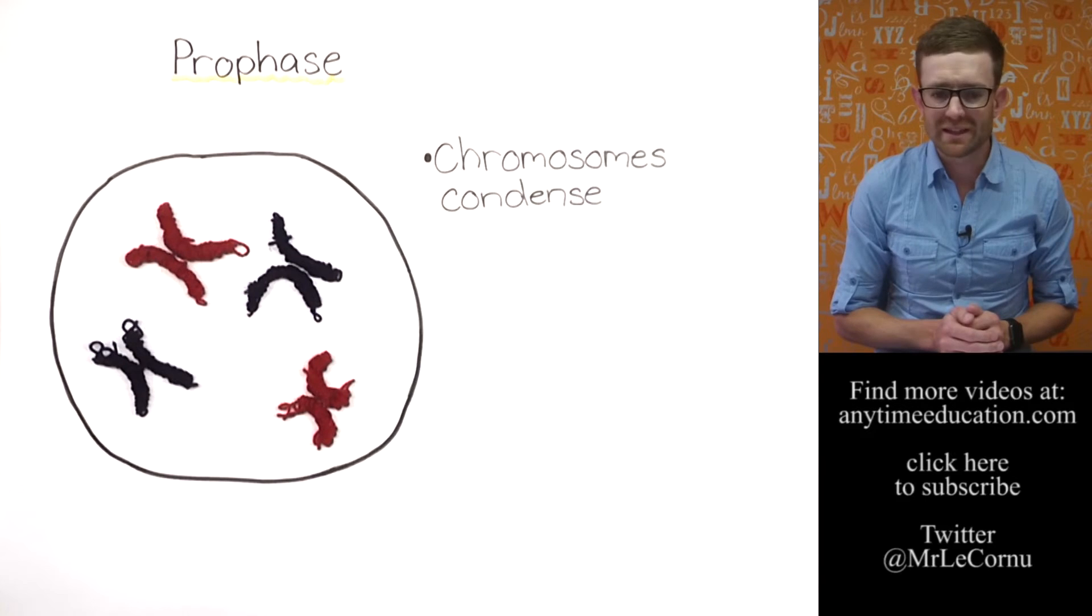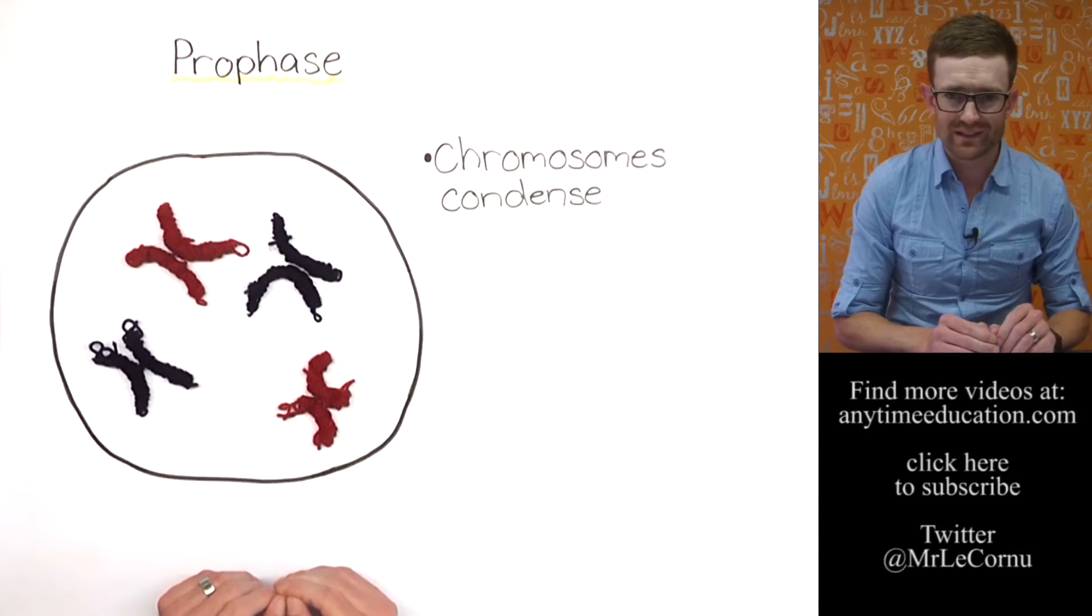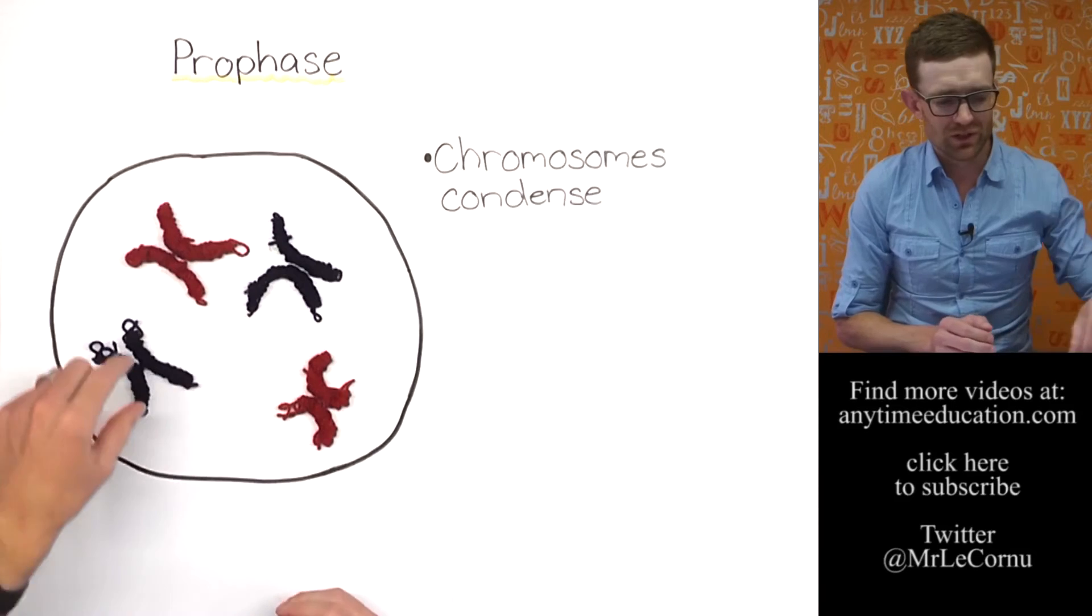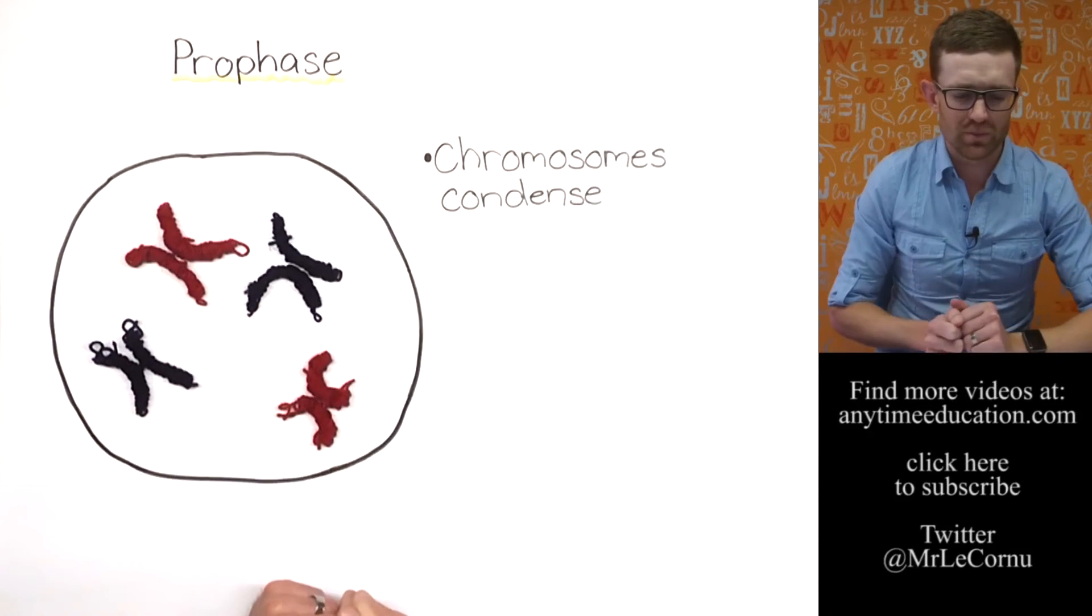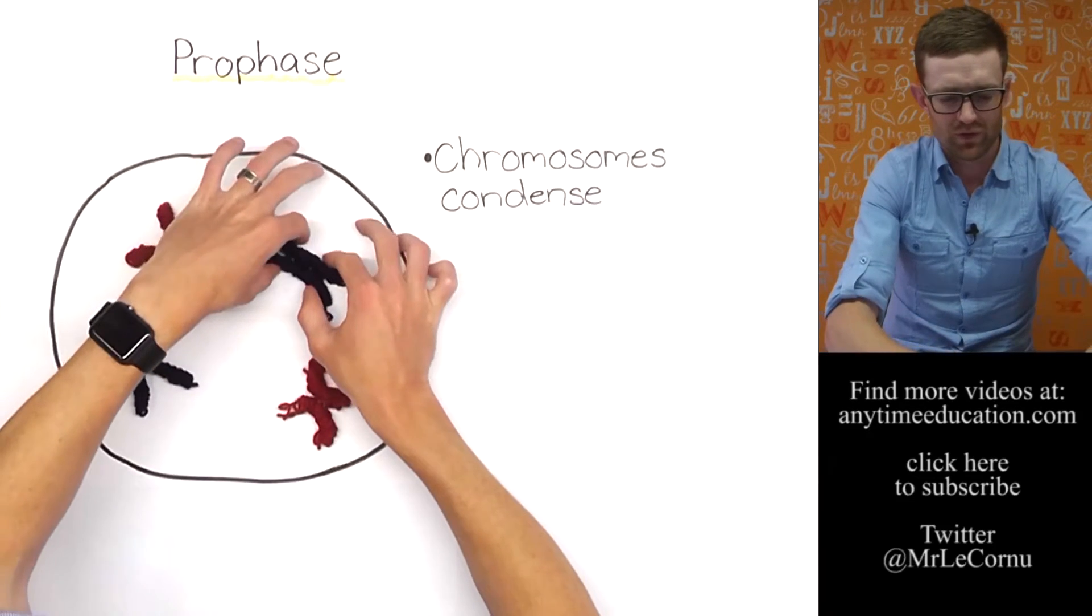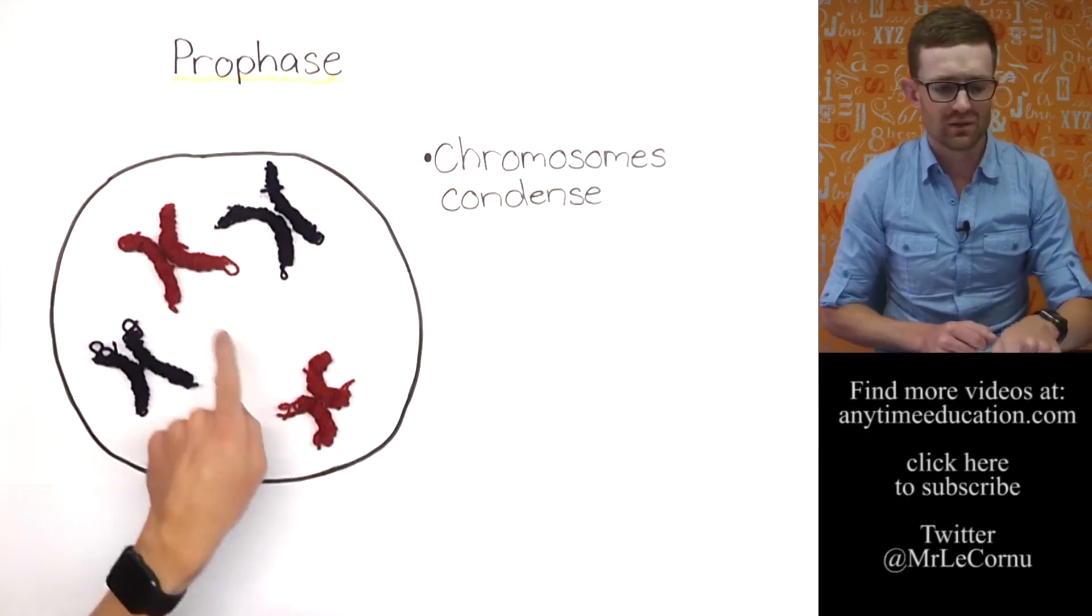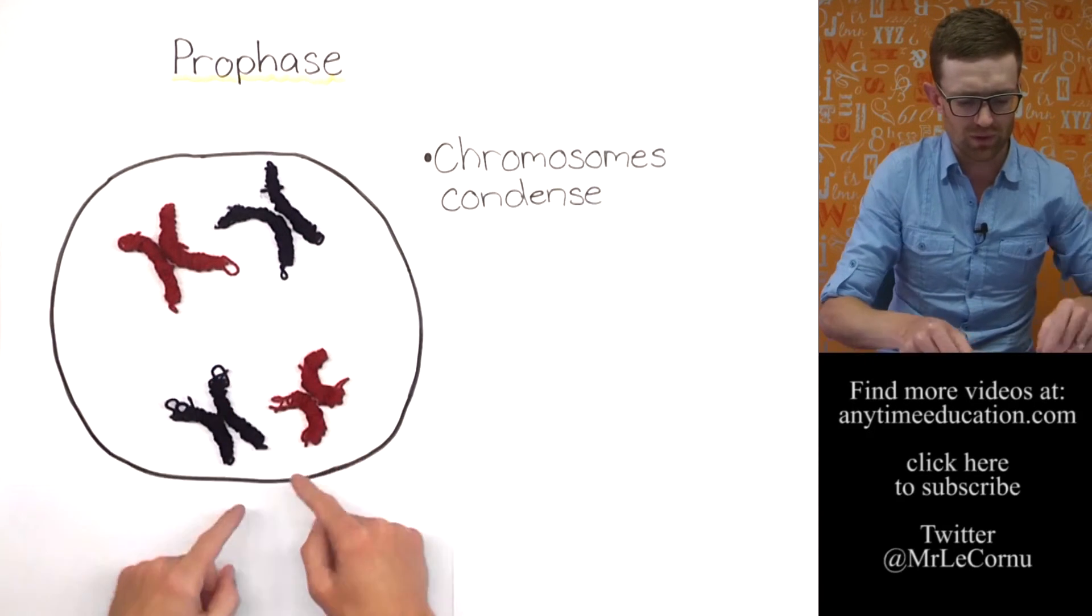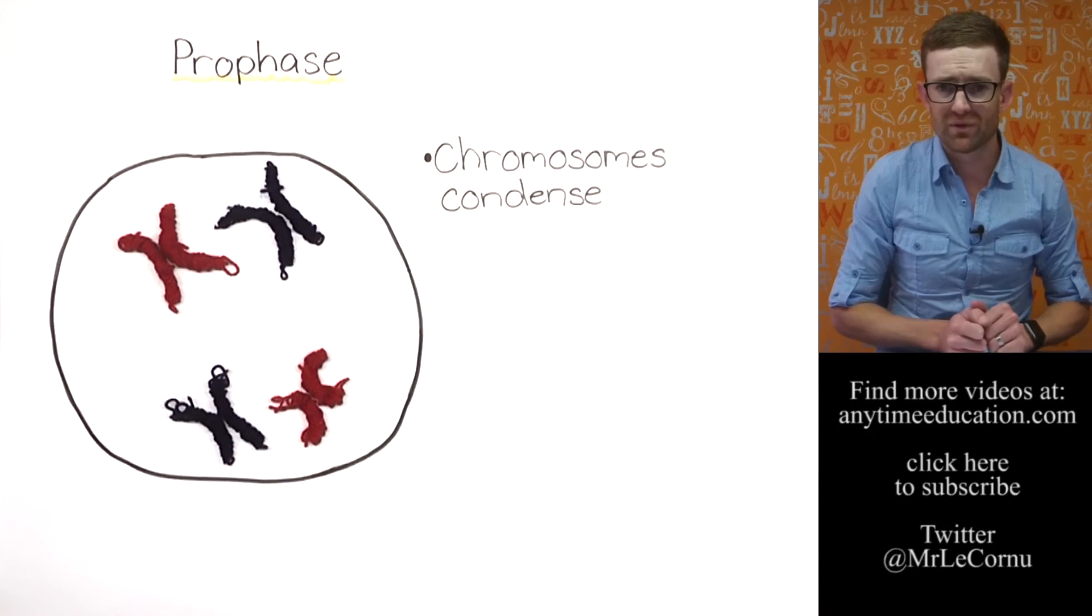Now, a couple of things that you're going to notice. Yes, first of all, we've got colors. The colors indicate that the chromosomes have come from different parents. So red chromosomes, they've come from the mother. Blue chromosomes, they've come from the father. We've got two big ones, so they're our chromosome one. One came from one parent, one came from the other. And we've got two smaller ones. They're chromosome two. One came from one parent, one came from the other.